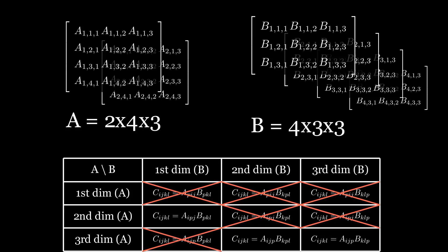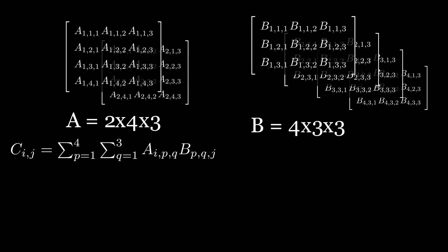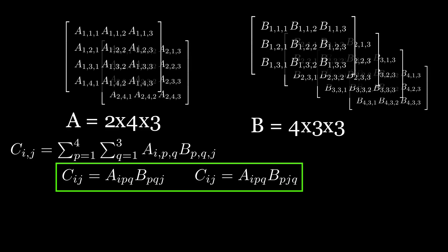Tensor contraction can also extend to multi-dimensional dot products. Both A and B have dimensions of length 4 and 3, so we can define a summation across both dimensions simultaneously. Each element in the output is then a sum of products across two dimensions of the input tensors. Taking two 3D tensors and contracting two dimensions yields a 2D output tensor — that is, 3 plus 3 minus 4 equals 2. There are actually two different 2D output tensors possible, depending on which dimension of length 3 in B is contracted, and both are expressed in Einstein notation.